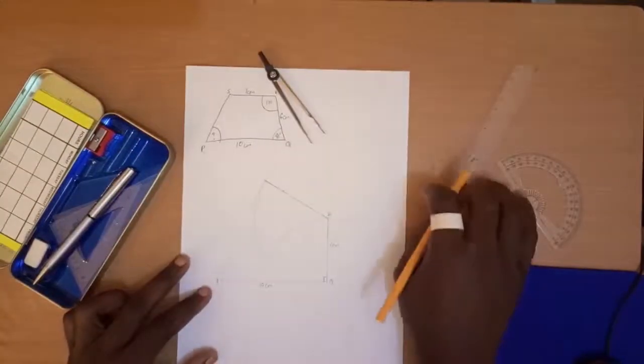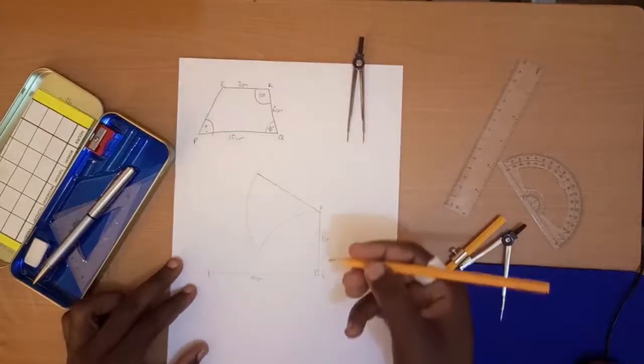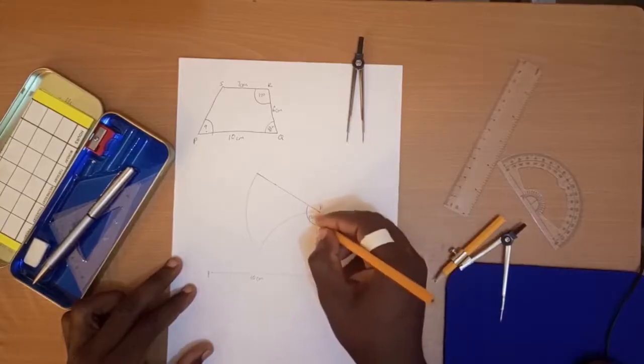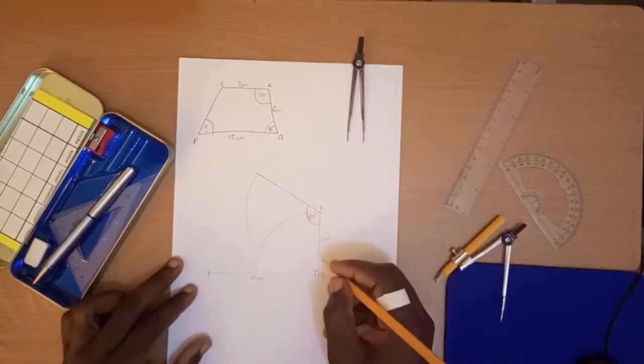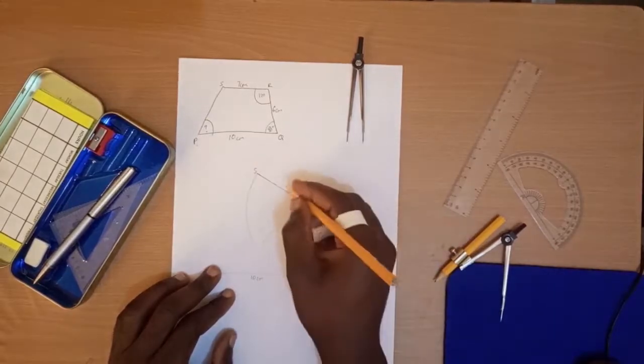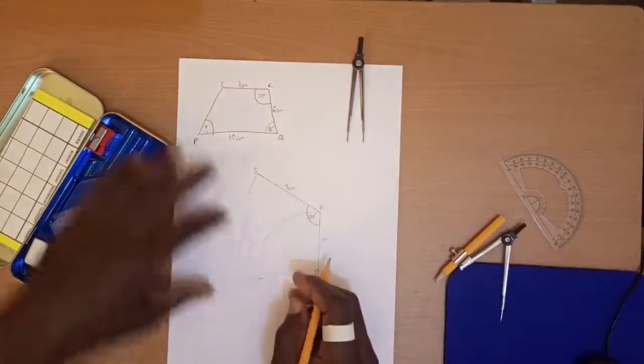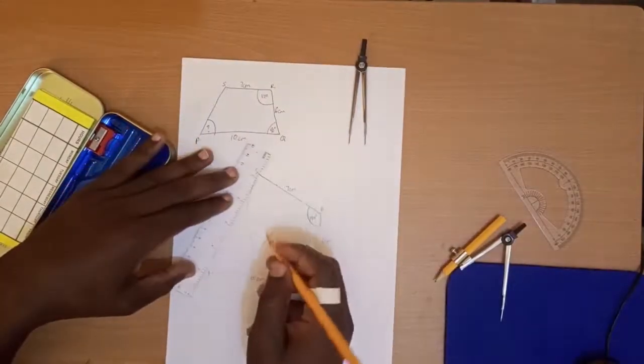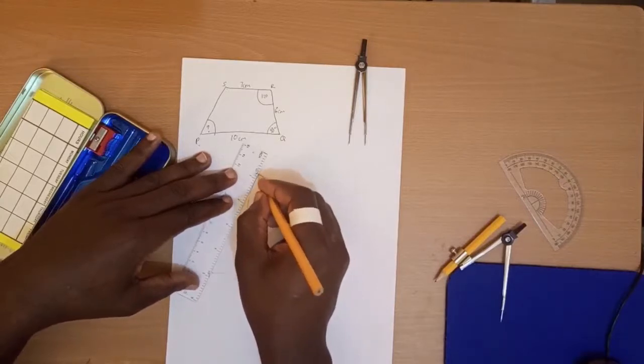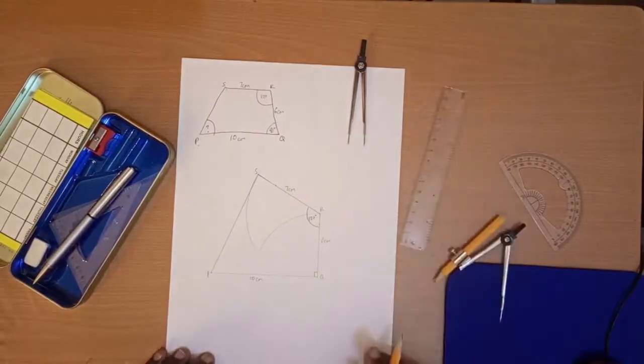Wonderful. Beautiful. It's coming out well. So that measurement here is 120 degrees. And that's where S is going to be, at 7 centimeters. So where that arc and that line have met, that point is point S. And so we connect it to P. So we have constructed the quadrilateral.